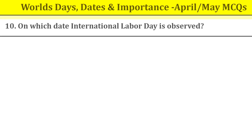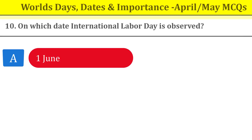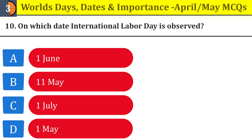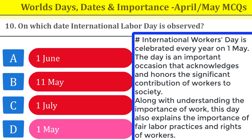Question number ten: on which date is International Labour Day observed? International Labour Day is on 1st May. This day is an important occasion that acknowledges and honors the significant contributions of workers to society, along with understanding the importance of fair labor practices and the rights of workers.